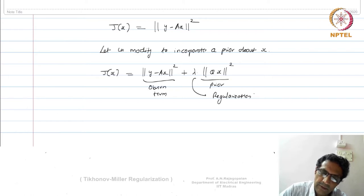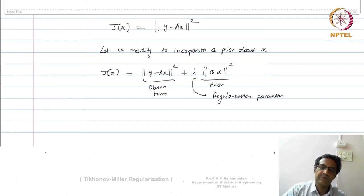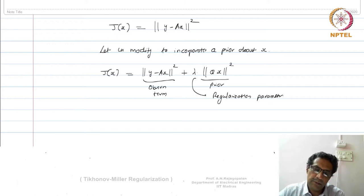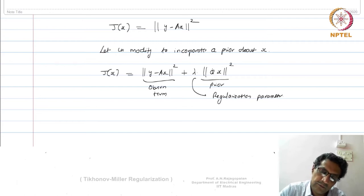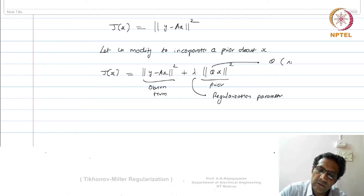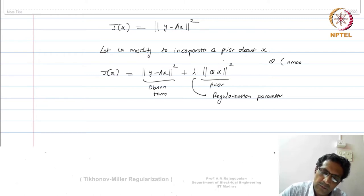Now, what does this all mean? Prior to understanding how this actually brings in stability and improves the condition number, let us first understand what Q is acting on x. This Q could be an identity, or typically will signify some kind of smoothness. The prior is typically a smoothness prior.